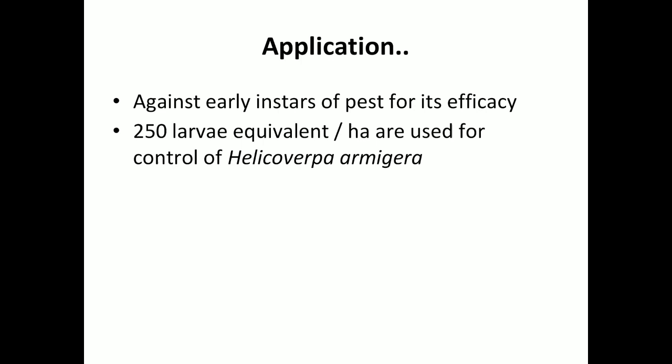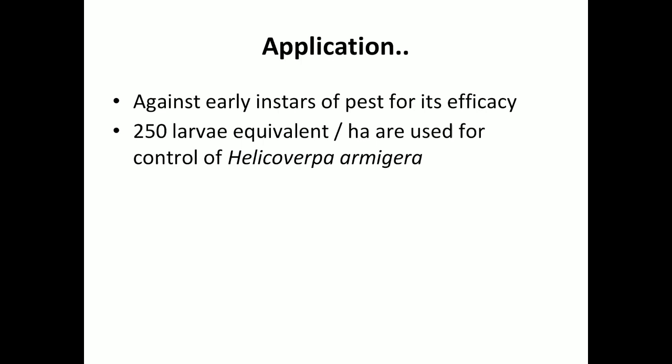The application rate and timing: NPV is effective against early instars of the pest. The application rate is 250 to 500 larval equivalents (LE) per hectare for controlling Helicoverpa armigera. In summary, we studied the mass multiplication of NPV, what NPV and baculovirus are, the different methods, how the media is prepared, how to apply it, and the application rate. Thanks for listening, take care.